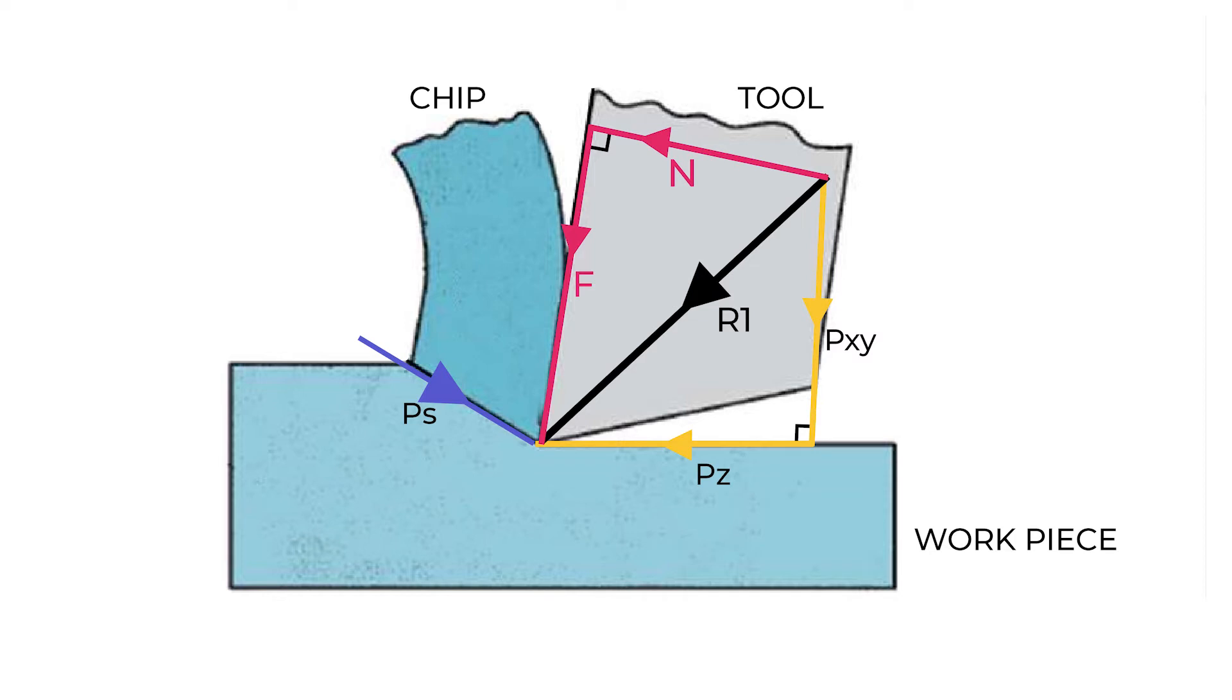Ps is the shear force which is essentially required to separate the chip from the workpiece, and Pn is the force normal to shear force that inherently exists with it. The resultant of these forces is R. Now the chip is in a state of equilibrium, and that means while machining the workpiece and the tool are fixed and hence they cannot move.